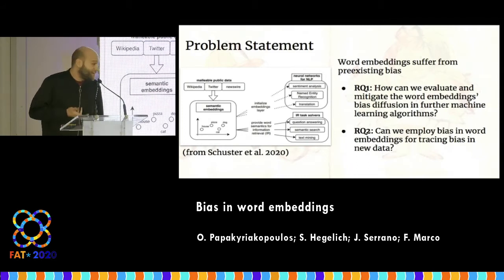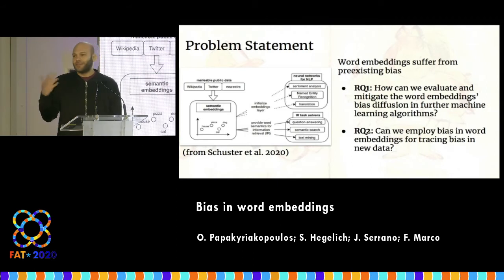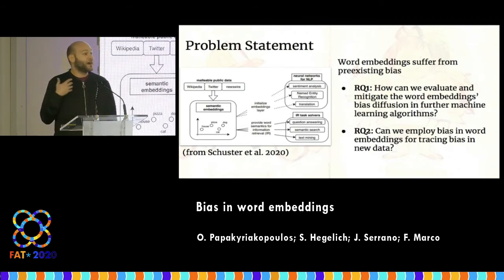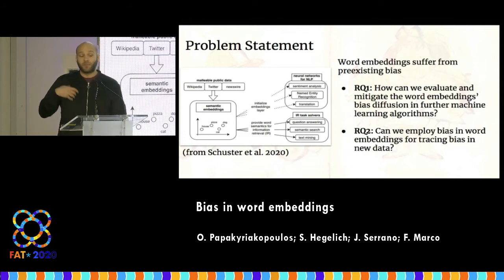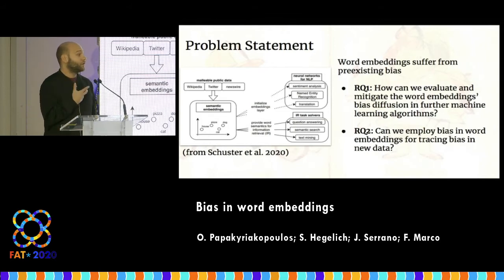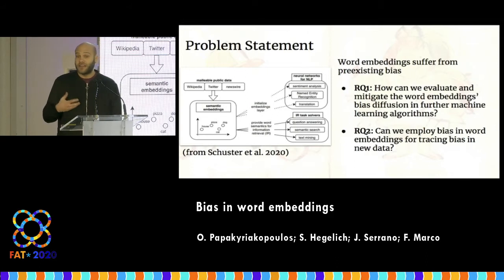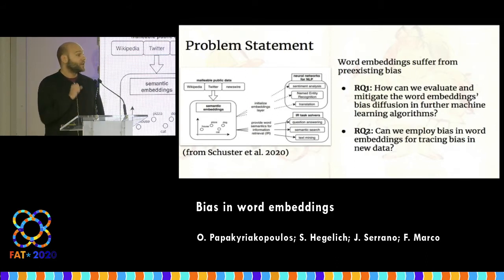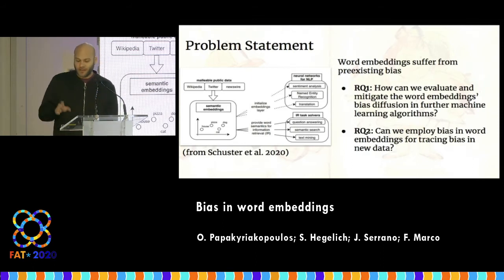Why do we care about this in our research? Word embeddings suffer from pre-existing bias — meaning that if the text they are trained on contains specific biases, these biases are imprinted in the embeddings. Our group wanted to investigate further, so we posed the following questions: how can we evaluate the diffusion of that bias into further machine learning models, and can we use that bias to trace new bias in new data?